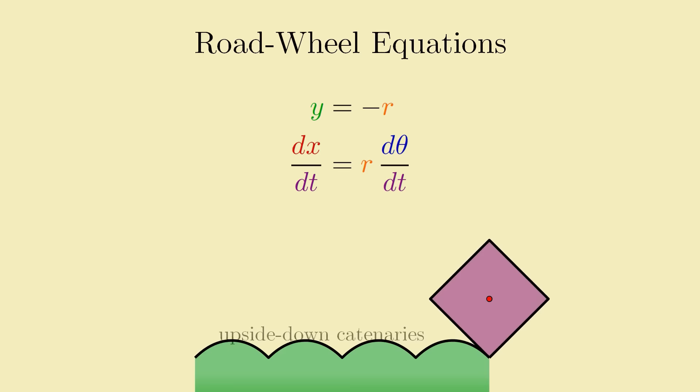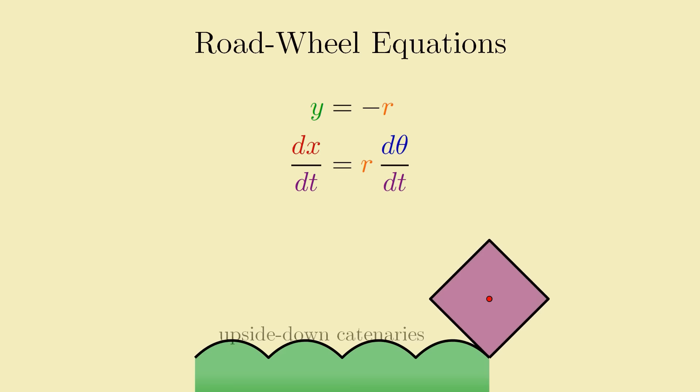These two observations gave rise to our two road wheel equations, which we use to determine that a square wheel rolls smoothly over a road made up of a chain of upside-down catenary curves.